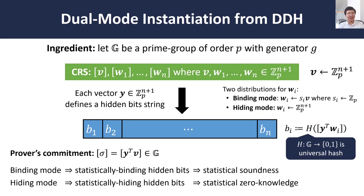In particular, what this means is that if we now go through the standard FLS compiler with these two modes of sampling the CRS, if we use the binding mode, we get a sequence of hidden bits that are statistically binding, which provides statistical soundness for the resulting NIZK. If instead we start with a sequence of vectors sampled in the hiding mode, we get a set of hidden bits that are statistically hidden from the perspective of the verifier, and this provides us statistical zero knowledge.